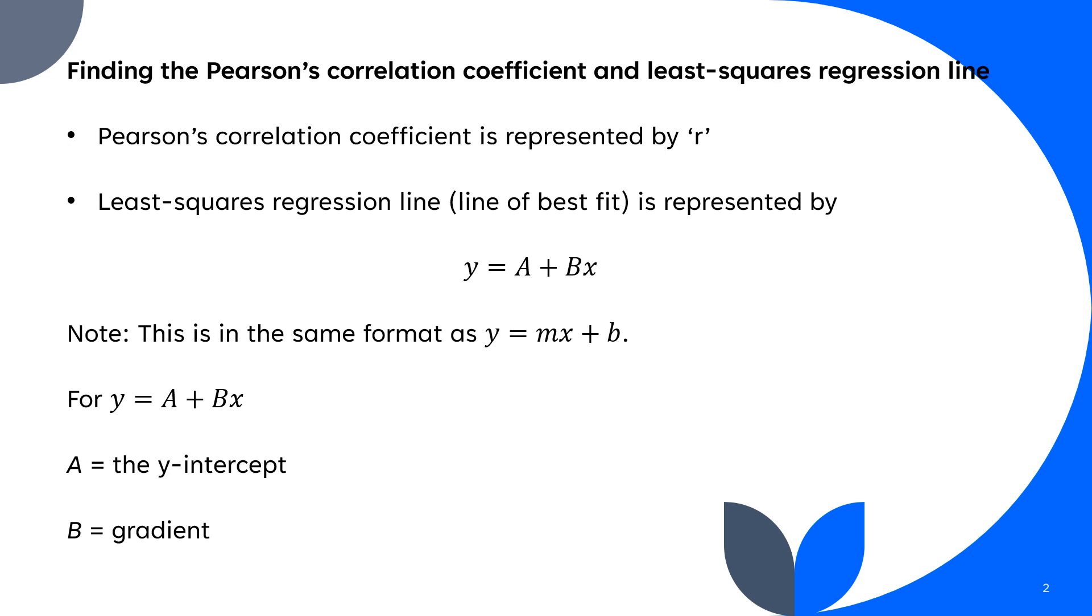From the last video, we saw that Pearson's correlation coefficient is represented by the letter R. The least squares regression line, or line of best fit, can be asked either way in the HSC. It is represented by y equals A plus Bx.